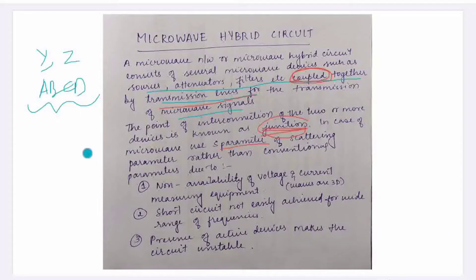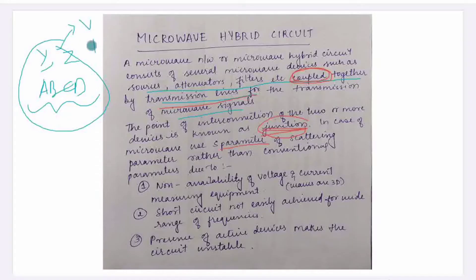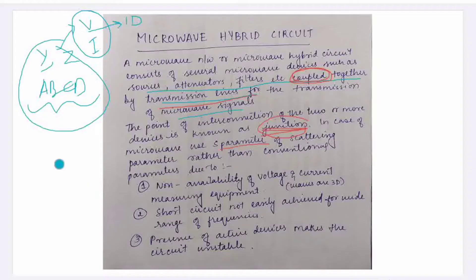For a two-port network, conventional parameters are Y, Z, A, B, C, D. We don't use these for microwaves because conventional parameters depend on voltage or current, which are one-dimensional quantities. You cannot plot voltage and current in 3D.